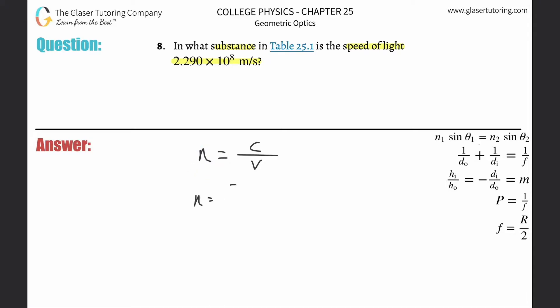So to find the index of refraction, we take our speed of light in a vacuum, three times 10 to the 8, and we divide it by the velocity of that light in a certain substance or medium, which in this problem they said was 2.29 times 10 to the 8.